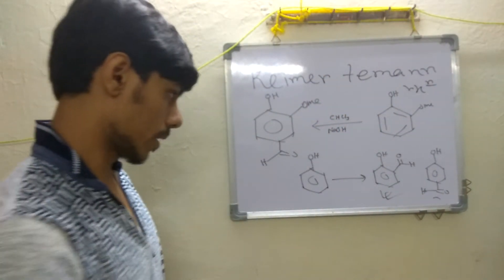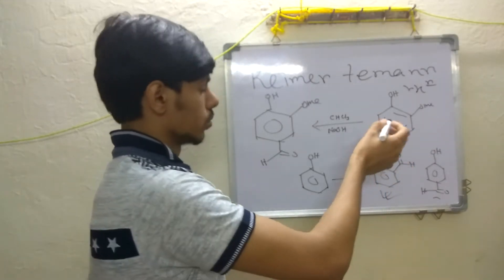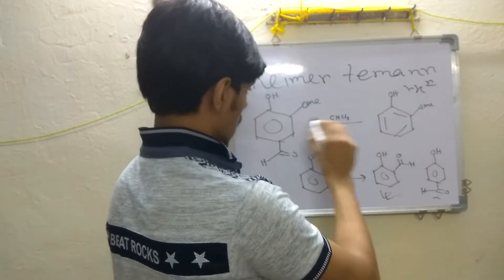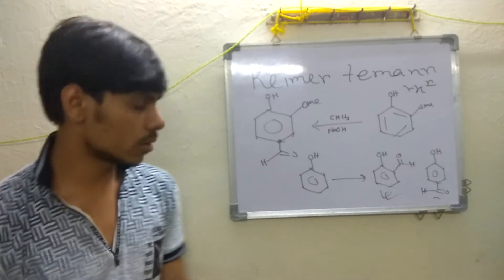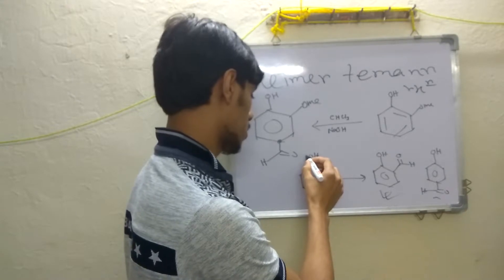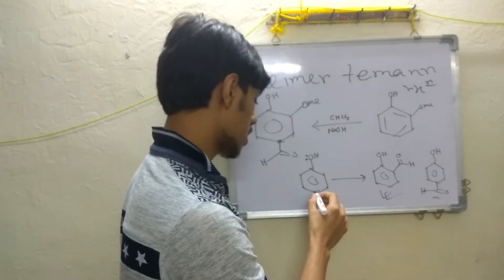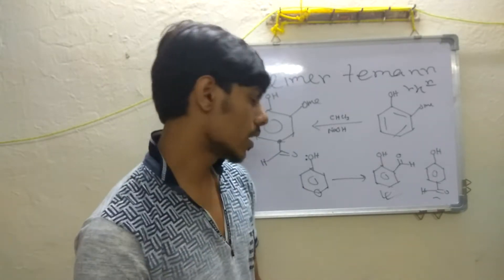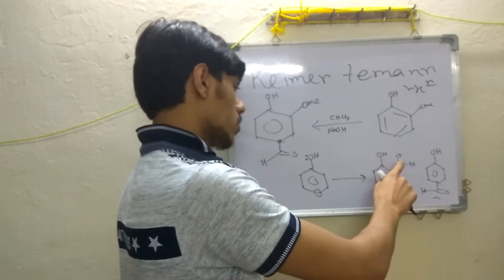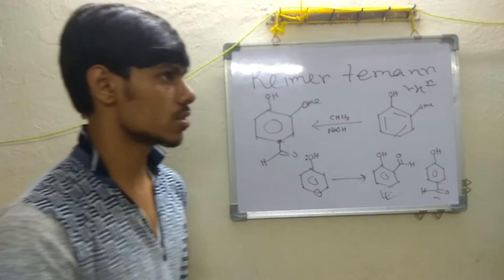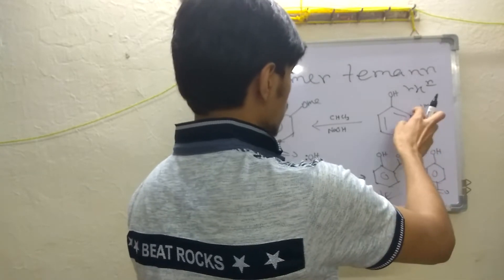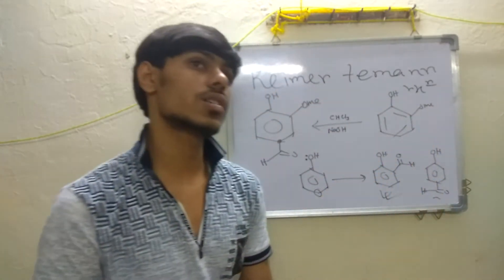In this case the formylation is occurring at the para position. You may know that generally in the phenol molecule the para position is more nucleophilic, so reactions generally occur at the para position. But for the Reimer-Tiemann reaction specifically, it is found that the reaction occurs at the ortho position. So if one of the ortho positions is blocked, as in guaiacol, then the reaction may occur at the para position instead.